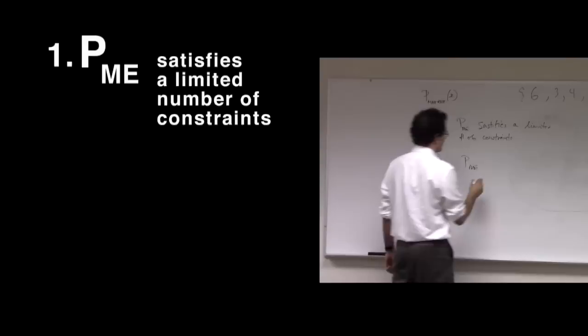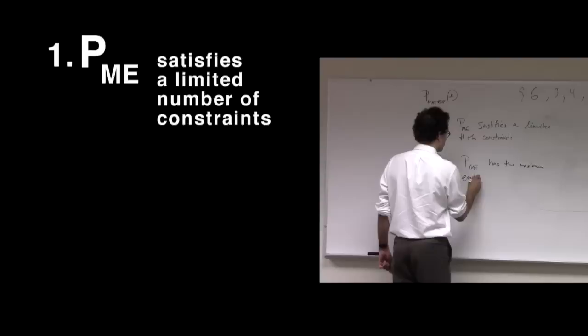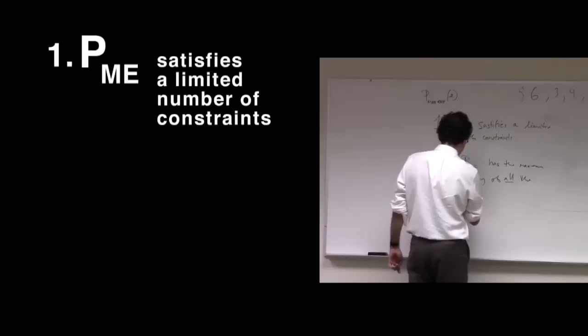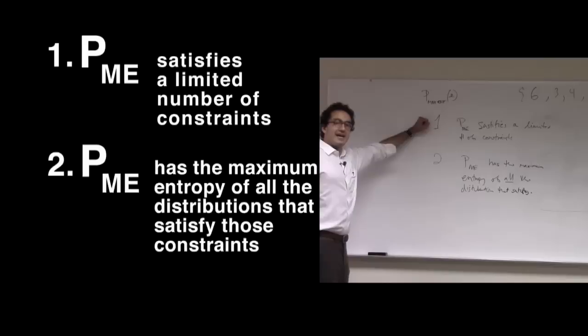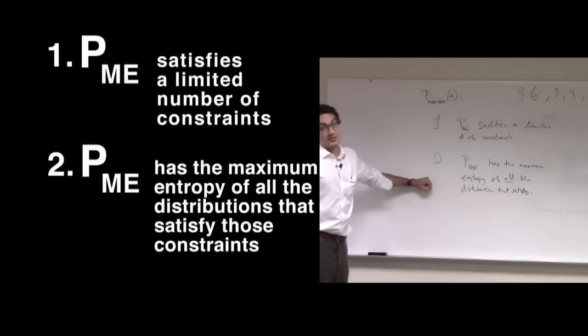And number two, the distribution that satisfies those constraints has the maximum entropy of all the distributions that satisfy those constraints. What we'll find is that there are potentially many probability distributions that satisfy the constraints, and we're going to pick the one, and it turns out it's the unique one, we're going to pick the one that has the maximum entropy out of all those distributions that satisfy those constraints.